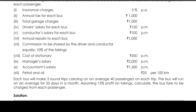Each bus will make 3 round trips carrying an average of 40 passengers on each trip. The bus will run on an average of 25 days in a month, assuming 15% profit on takings.